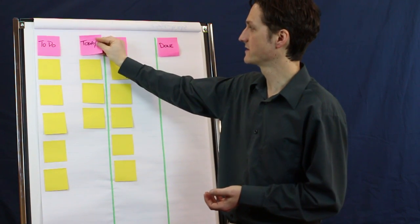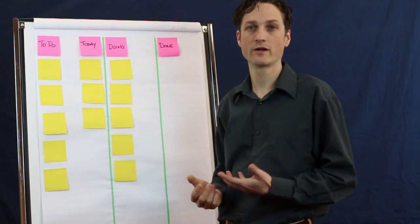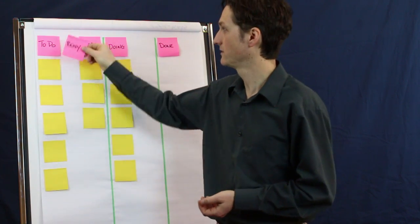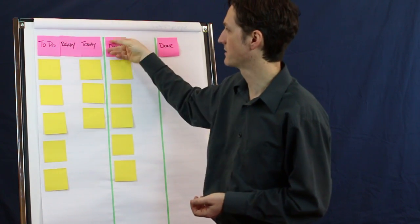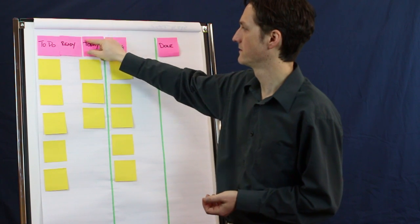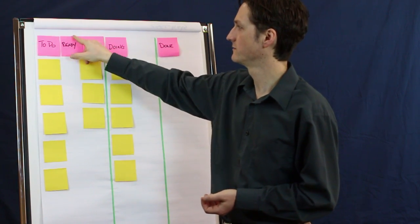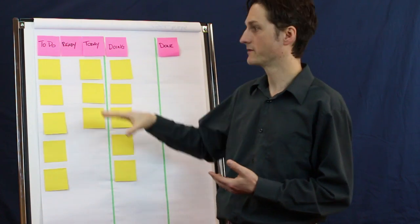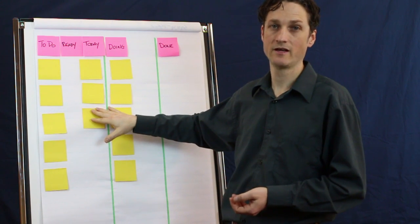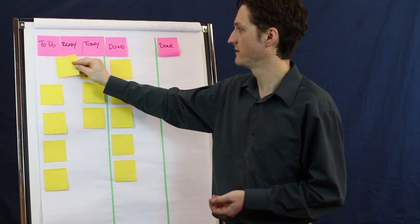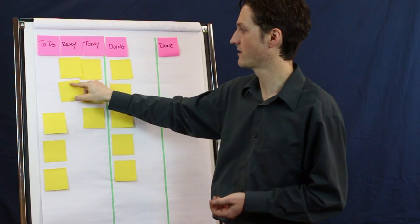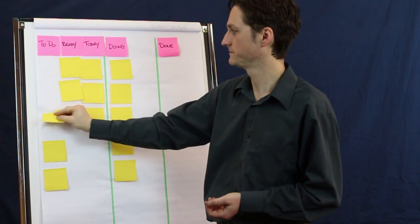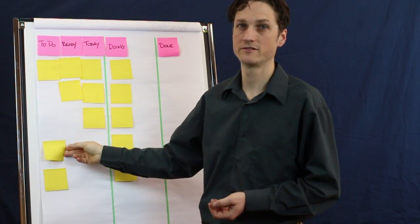If that still seems like not quite enough granularity, another simple option here is to add in what's called a Ready column. Ready just means that when there's room freed up in my Today, I can choose from a smaller set of options out of my to-dos.